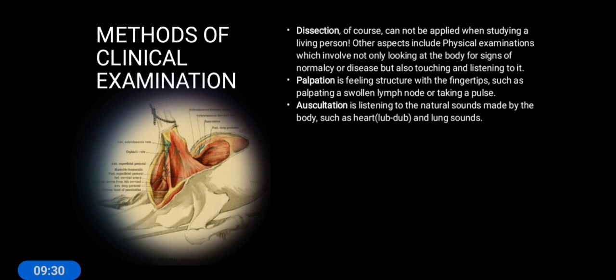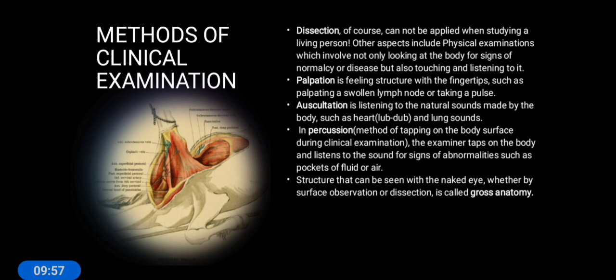Second is auscultation — listening to the natural sounds made by the body, such as the heartbeat (lub-dub) and lung sounds. When the doctor listens to your heartbeat or lung sounds to check for normalcy or disease, it becomes auscultation. Third is percussion — the method of tapping on body structures during clinical examination. The examiner taps and listens for signs of abnormality, such as pockets of fluid or air causing bulging of a body part.